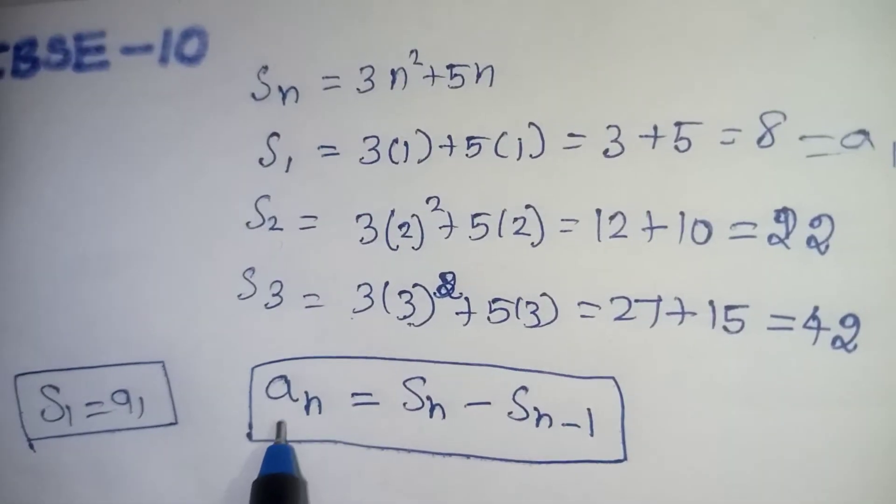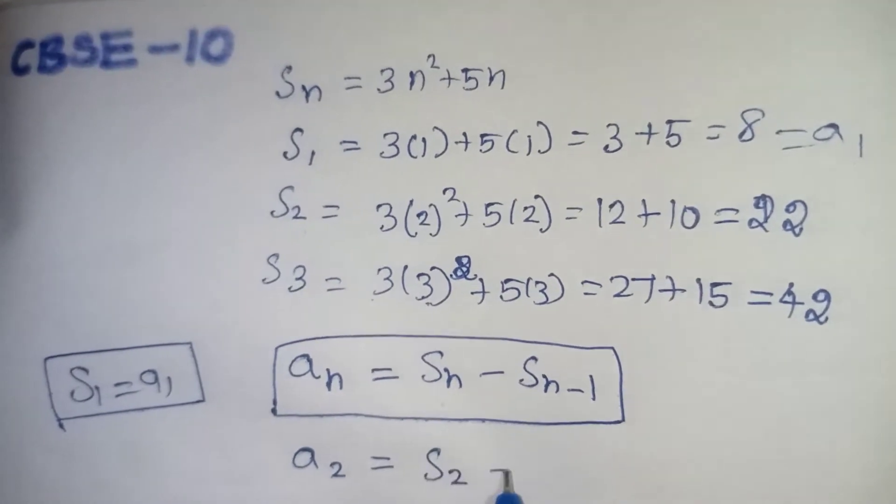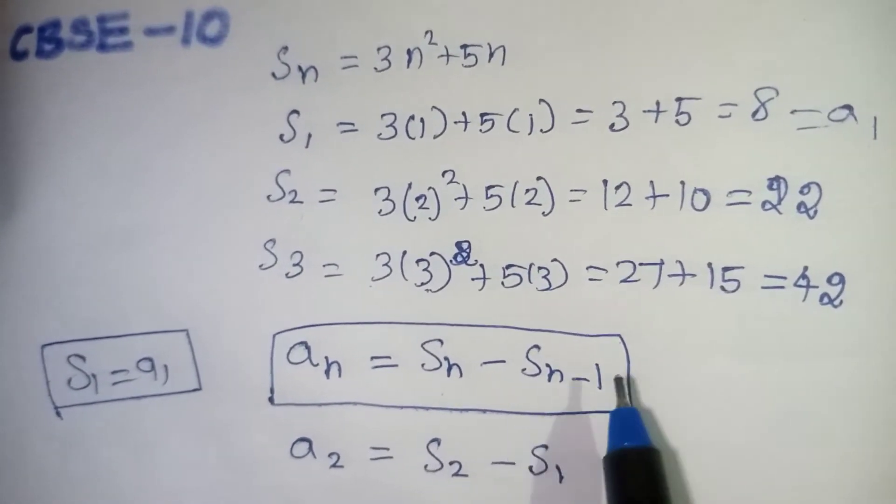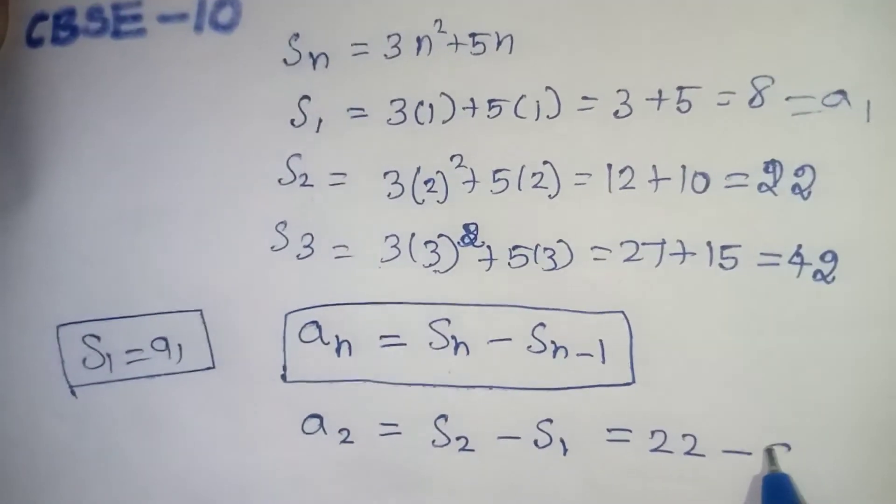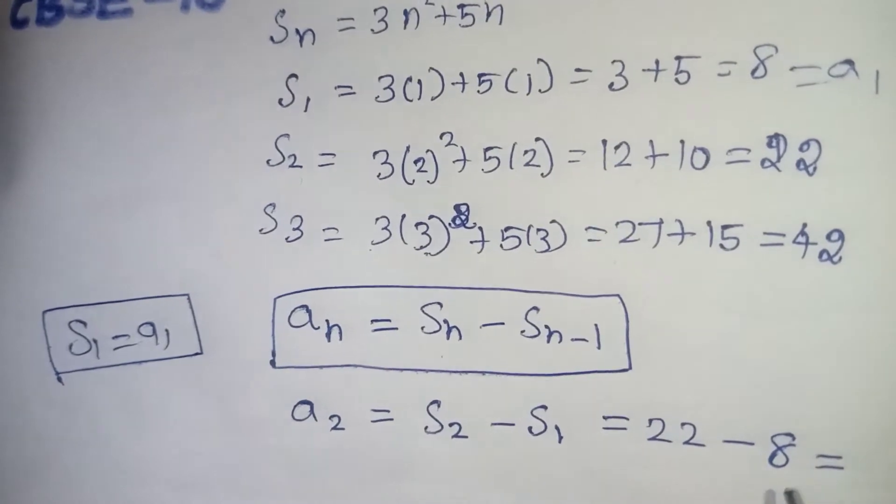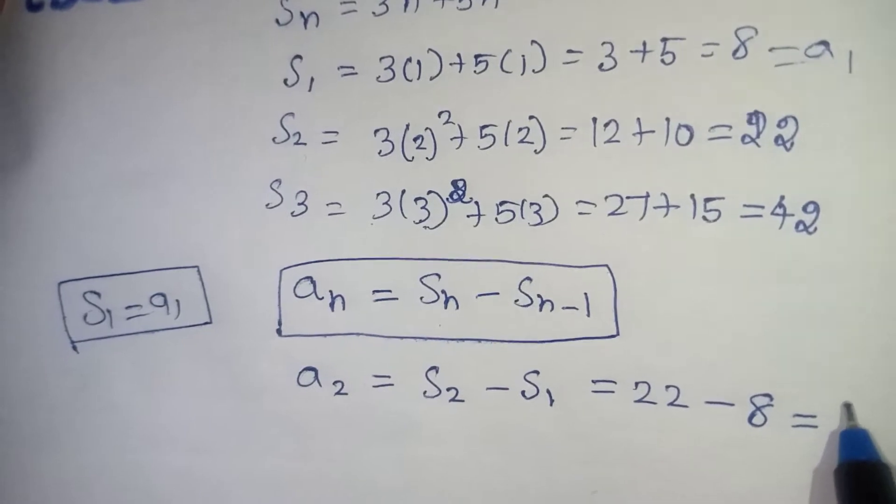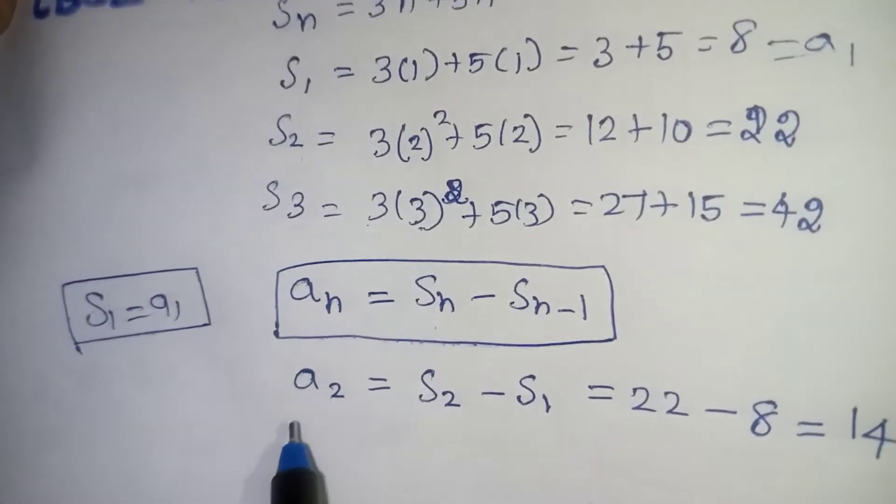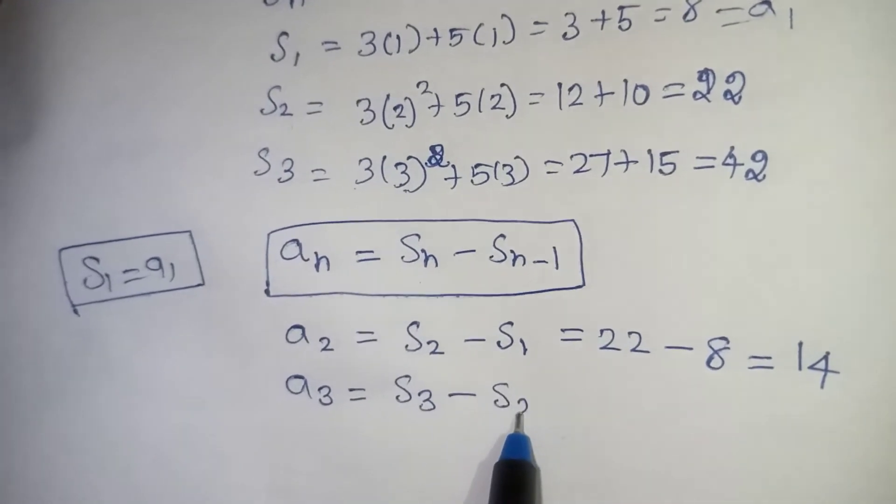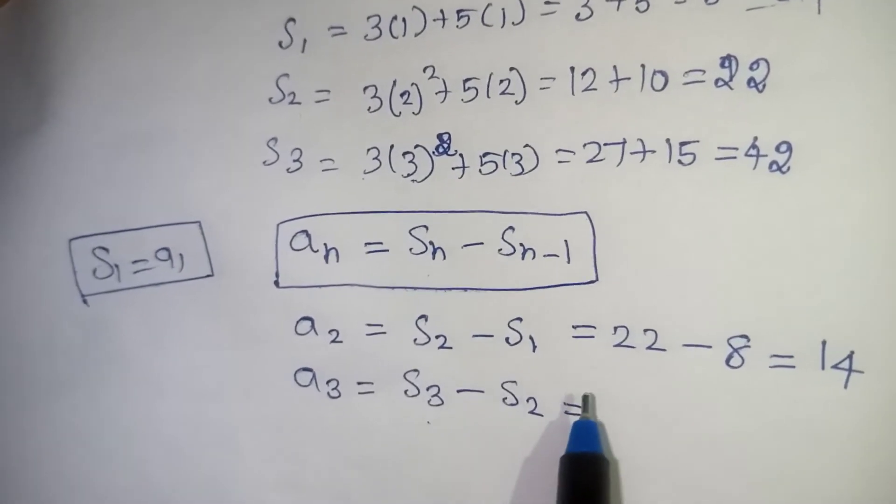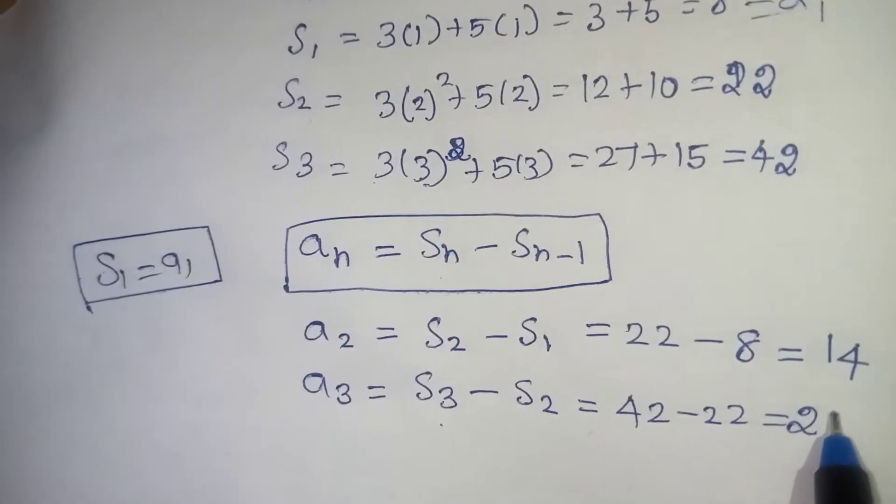Now we need to find out what is A2. Now A2 is equal to S2 minus S1. This is your formula. In the place of S2 we have to take 22, and minus S1 we have given us 8. So 22 minus 8 will give you 14. Next one A3. If you want to find A3, from S3 we have to subtract S2, which is equal to S3 is 42 and your S2 is 22. If you subtract, 20 is coming, that is your correct value.